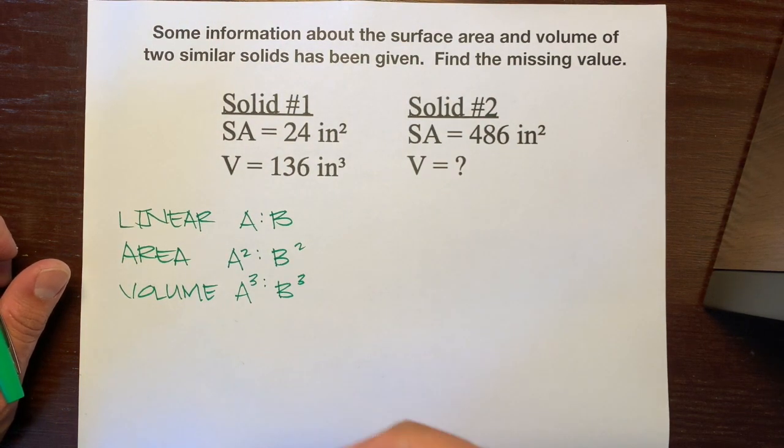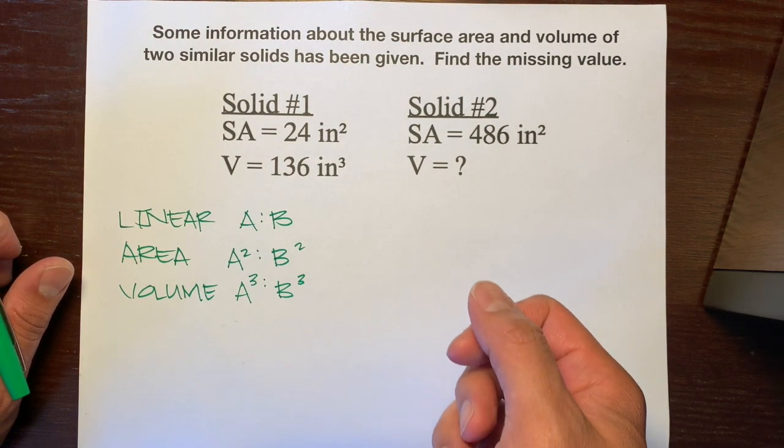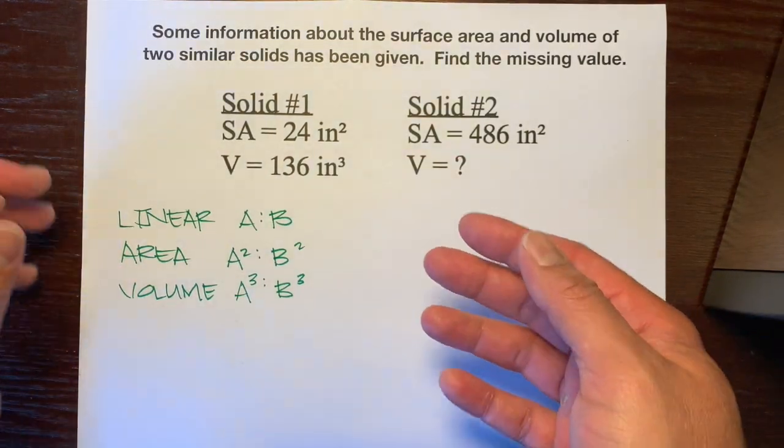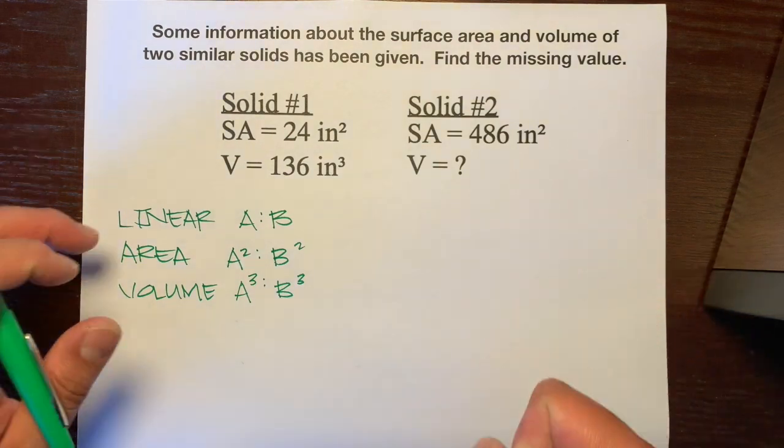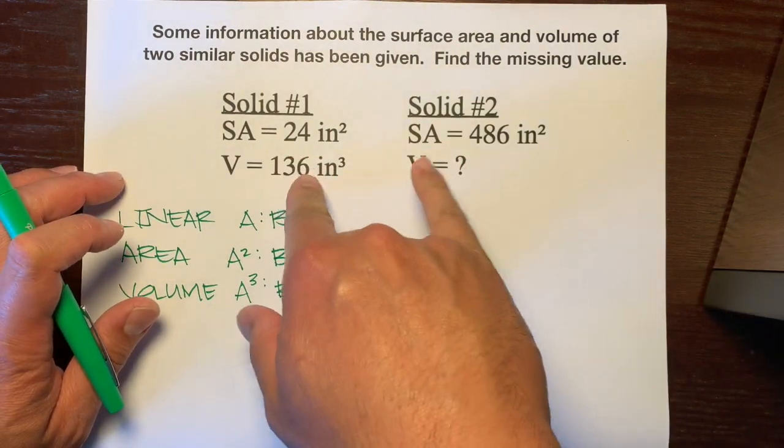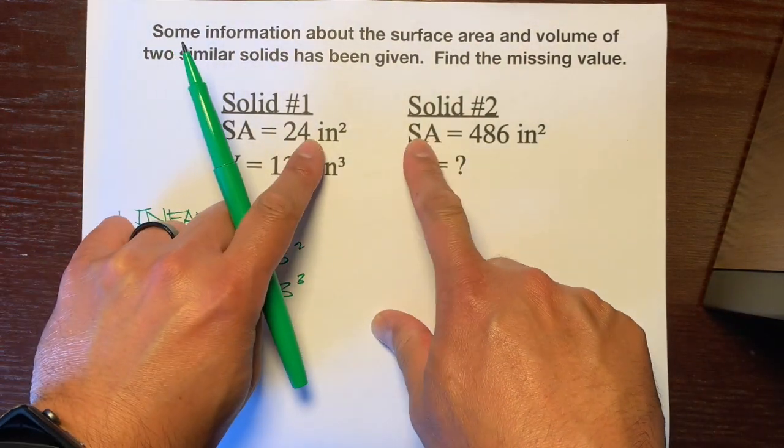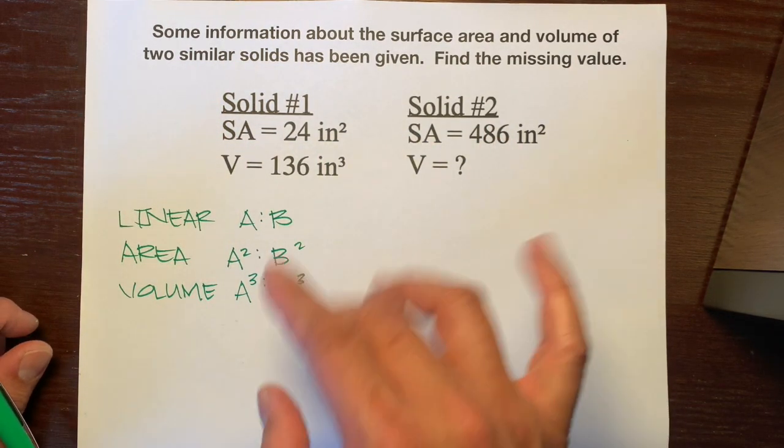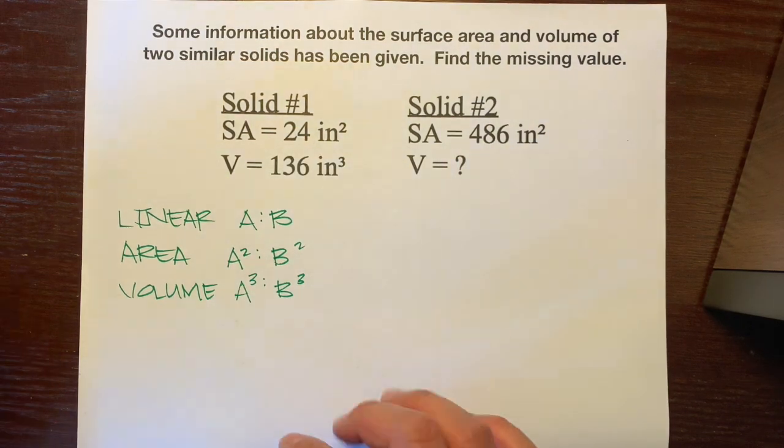So, our goal is to use some of the information to find the linear scale factor, and then we'll use the linear scale factor to find what's missing. So, it looks like we have both surface areas for both solids. So, what we're going to do is we're going to write this as a ratio.